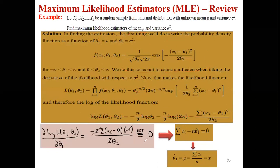Now we differentiate with respect to theta 1. Terms not containing theta 1 become zero — those constants vanish. When we differentiate the summation term, the chain rule brings down a factor of 2 and gives x_i minus theta 1 to the power 1 times minus 1. Setting equal to zero and simplifying, we get theta 1 equals x-bar, which equals mu. This means the first parameter of the normal distribution, mu, is estimated by the sample mean.